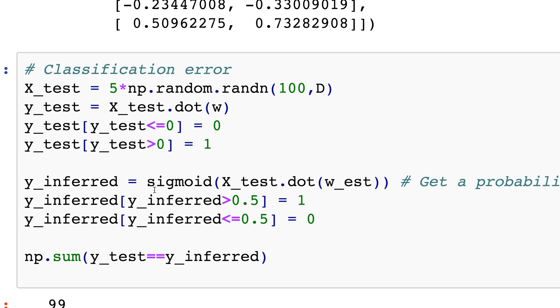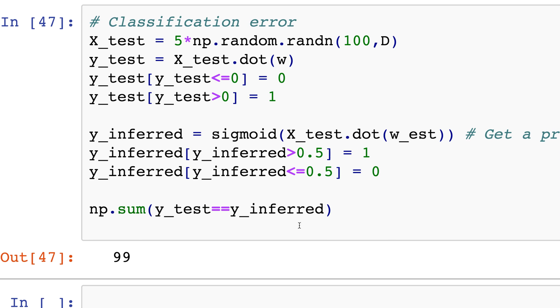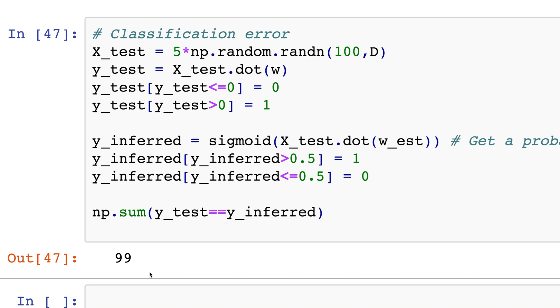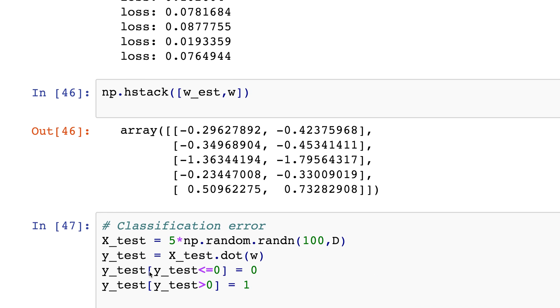If it's greater than 0.5 let's call it 1, if it's less than 0.5 call it 0. So in this case the number of things that agree with the true y, y test I should say, is 99 of them. So TensorFlow's gone ahead and found the w's for us.